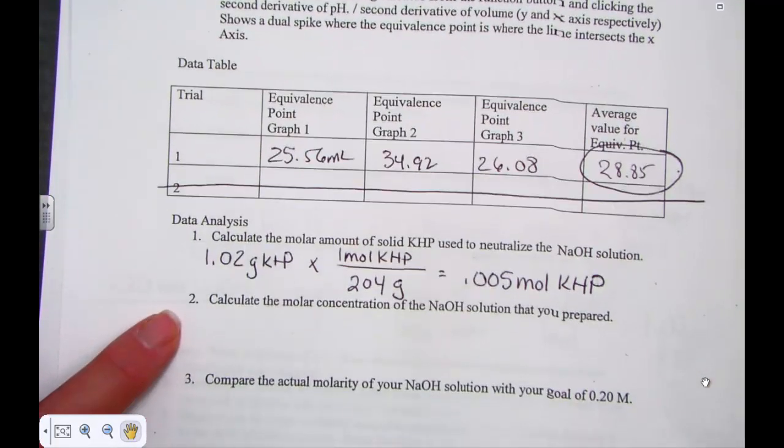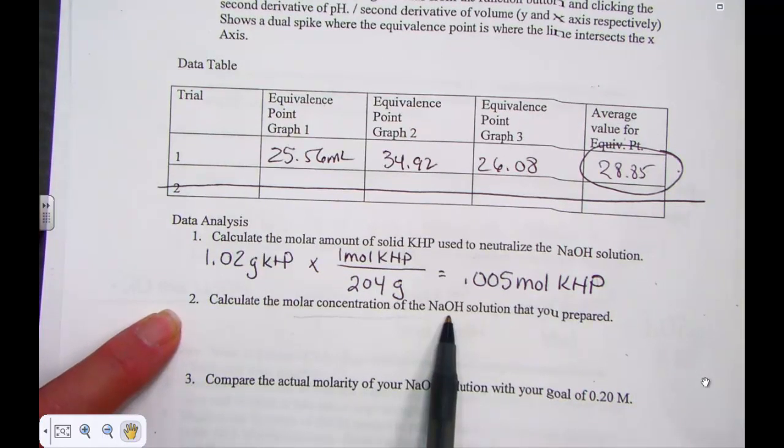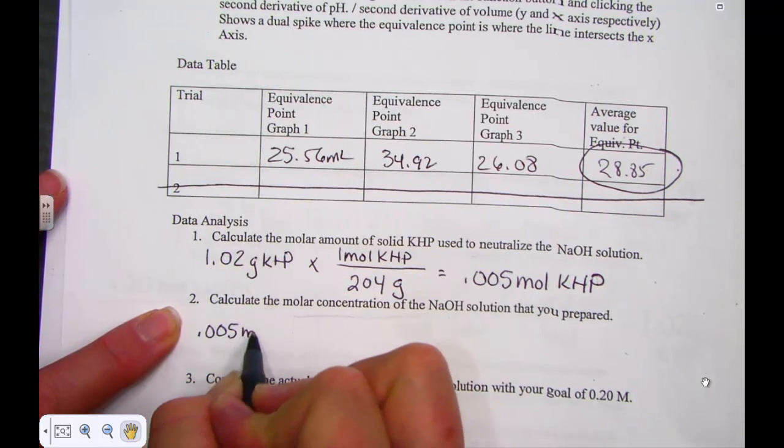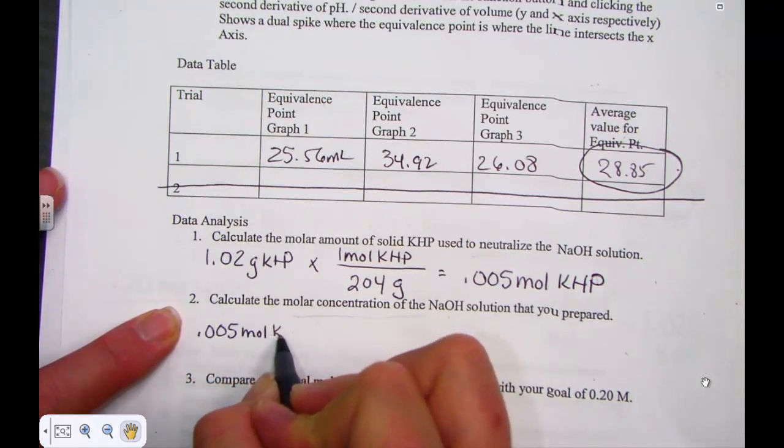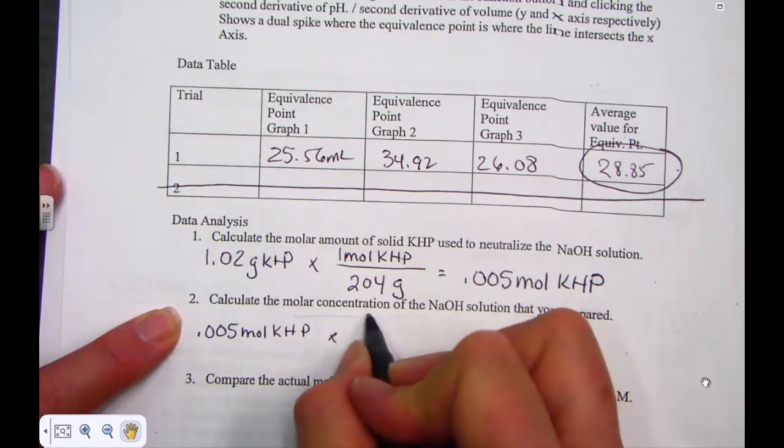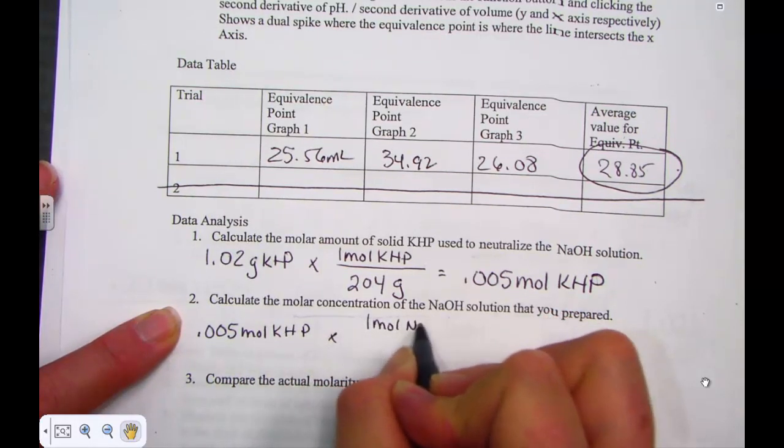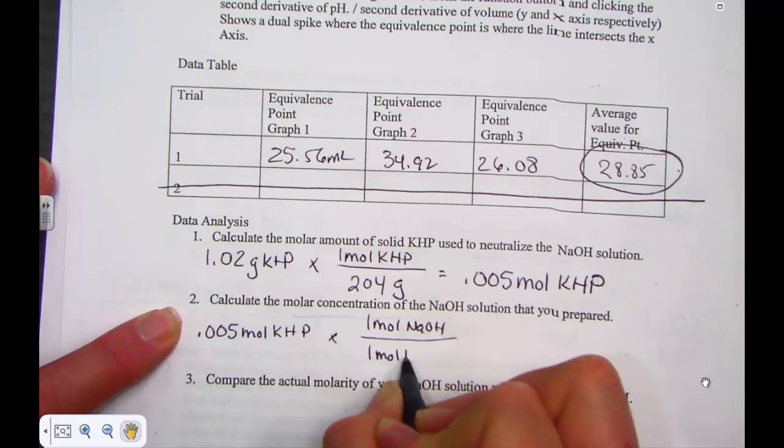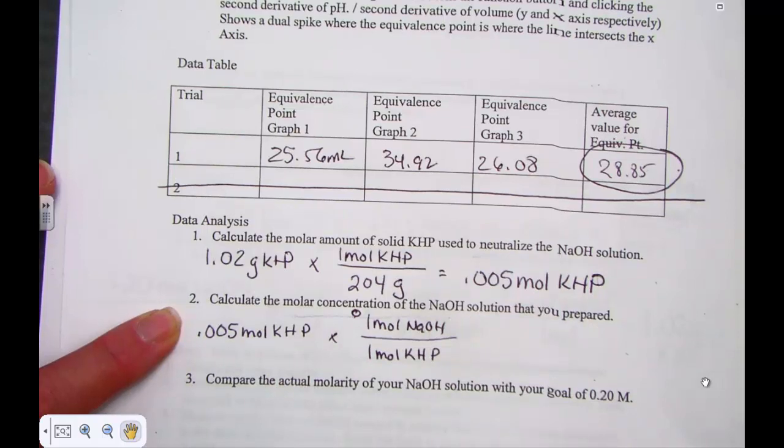In step two, now we're trying to solve for the molar concentration of NaOH that we prepared. So knowing that this is the solution stoichiometry part of our lesson, we have a one-to-one stoichiometric ratio. That one mole of our standardized NaOH will be neutralized for every one mole of the KHP that we've had. So here's the heart of our problem, a one-to-one ratio.